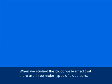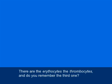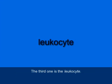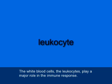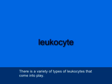When we studied the blood, we learned there are three major types of blood cells: erythrocytes, thrombocytes, and leukocytes — more commonly known as white blood cells. The white blood cells, the leukocytes, play a major role in the immune response, and there are a variety of types of leukocytes that come into play.